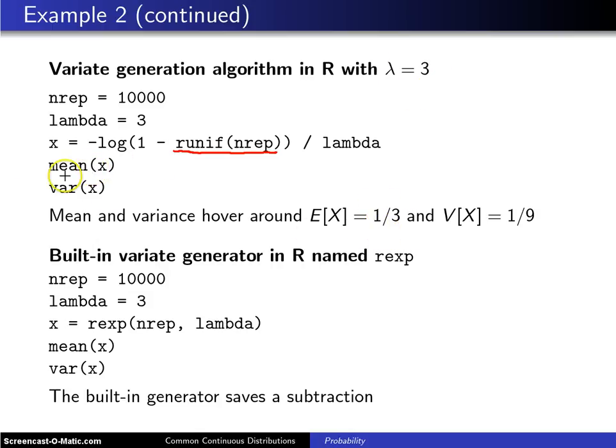And if you look at the variance, it will hover around 1 ninth, that is 1 over lambda squared, which is the variance of the exponential distribution.